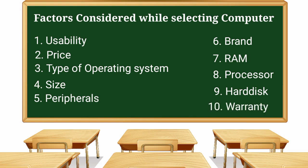The last factor is warranty. When we purchase a computer, we need to ensure we have a warranty, especially since electronics can be uncertain. In summary, the factors to consider when selecting a computer are: Usability, Price, Operating System, Size, Peripherals, Brand, RAM, Processor, Hard Disk, and Warranty.